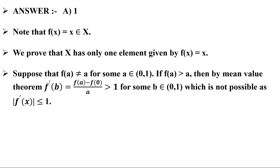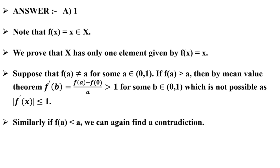How do we prove it? Suppose that f(a) is not equal to a for any element belonging to open interval (0,1). Then we can assume that f(a) will be greater than a — if not equal, either it will be greater or it will be less. Assuming it is greater than a, then by the Mean Value Theorem, f'(b) = [f(a) − f(0)] / a, and that will be greater than 1. Because f(a) is greater than a, if we divide both sides by a, f(a)/a will be greater than a/a = 1, for some b belonging to the interval (0,1). But this is not possible as f'(x) has to be less than or equal to 1. The similar contradiction will arise if we take f(a) as less than a.